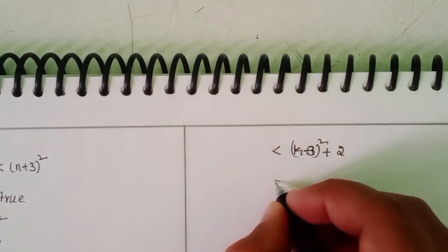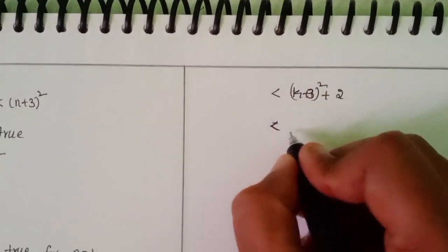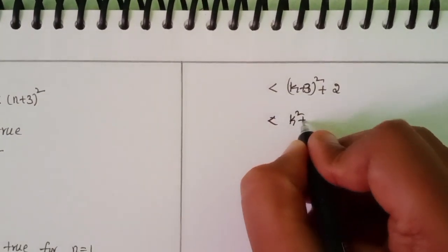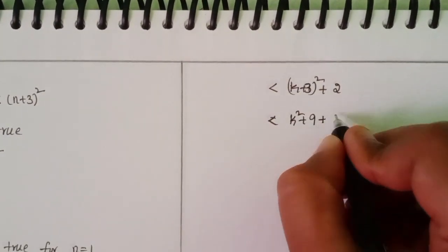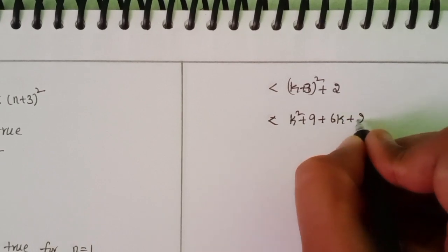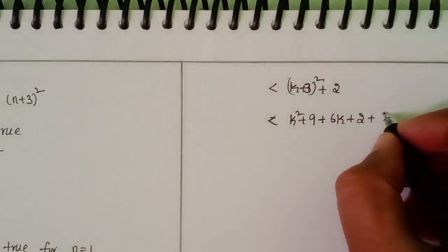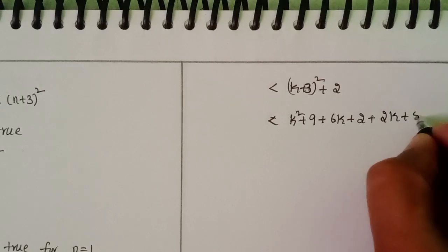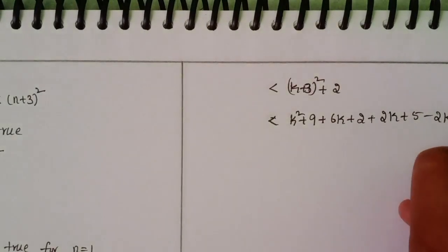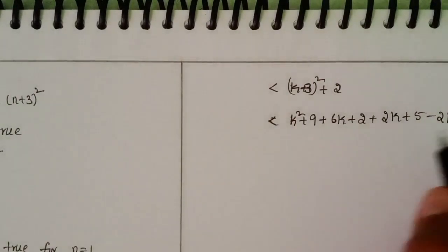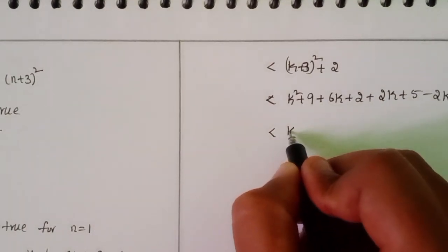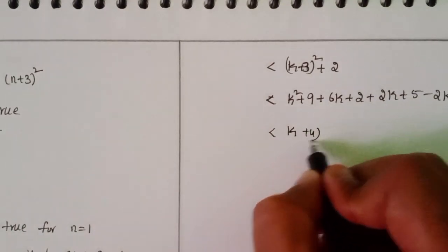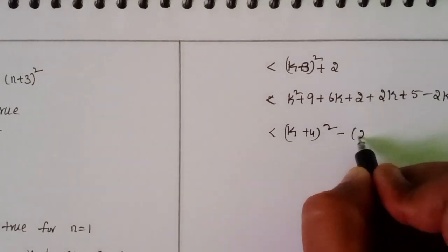Okay, same. Last two we will do like this only: k square plus 9 plus 6k plus 2. Here, at this side, 2k plus 5 minus 2k minus 5, add and subtract this one. Okay, here k plus 4 whole square minus of...